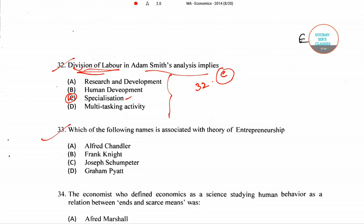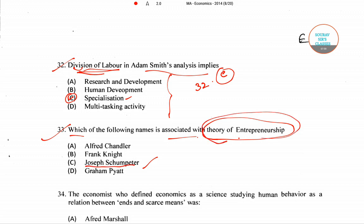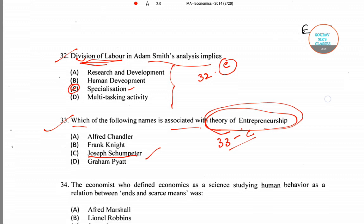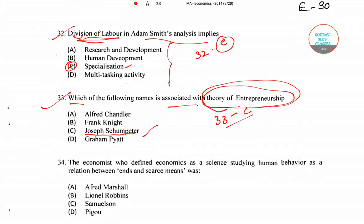Question number 33 asks which name is associated with the theory of entrepreneurship. The right answer for question number 33 is option C.